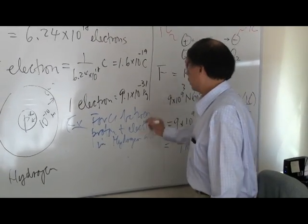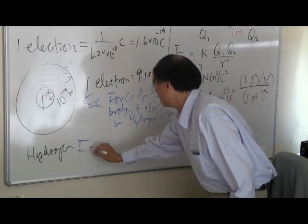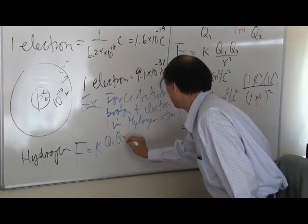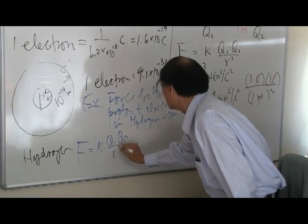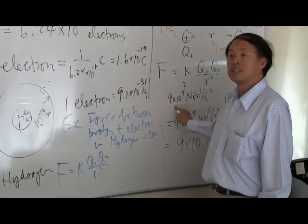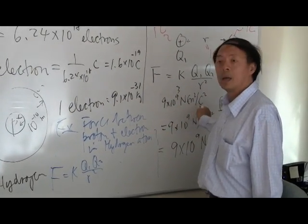So what you're going to do is that you would have to plug in the formula F equal to K times Q1, Q2 divided by R squared. With K being 9 times 10 to the 9 Newton meter square per coulomb square.